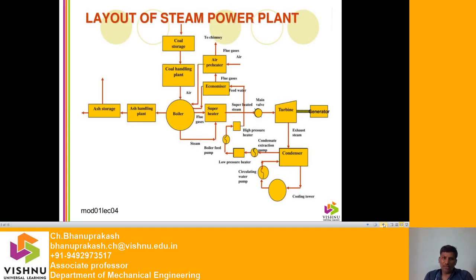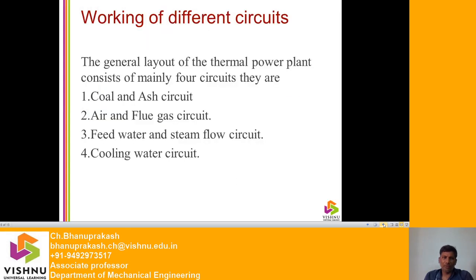We will see the layout of the steam power plant as discussed in the earlier lecture. The general layout of the thermal power plant consists of mainly four circuits: coal and ash circuit, air and flue gas circuit, pure water and steam flow circuit, and finally the cooling water circuit. We will discuss each one in detail.